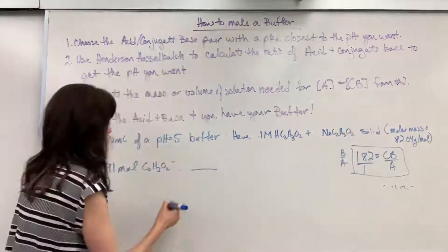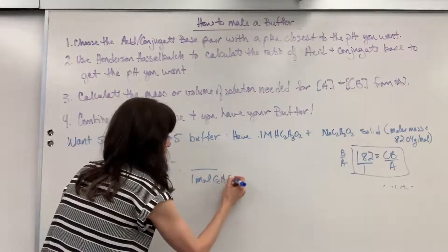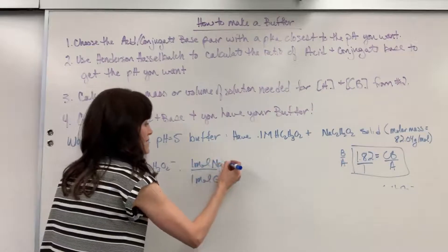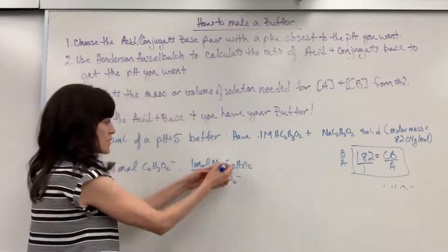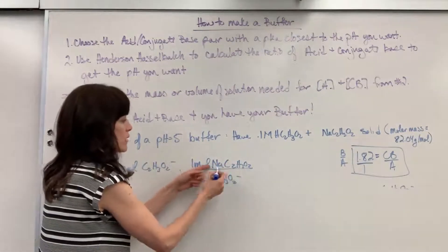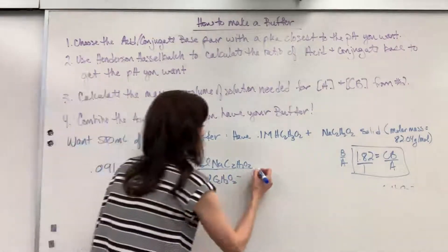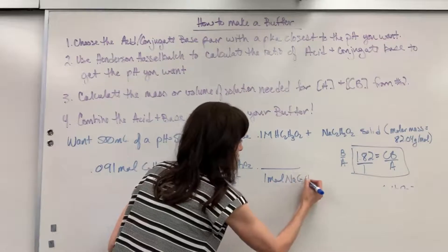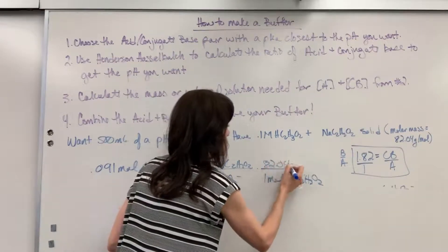So notice what I'm going to do here. One mole of the acetate ion is in one mole of sodium acetate. NaC2H3O2. Notice there's one of the acetate ion right there for every one mole of the sodium acetate. Now I can bring this to grams.